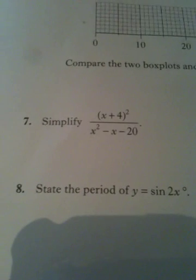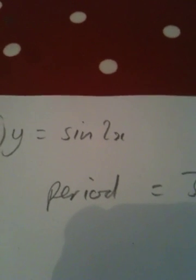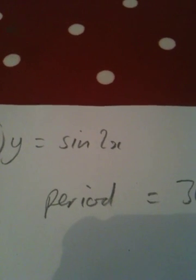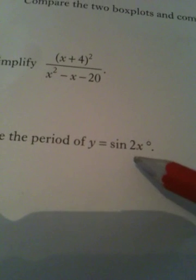Question number eight. State the period of Y equals sin 2X. The period is the length of a wave. And the 2 tells us that we will have two complete waves in 360. So if we do 360 divided by 2, that will tell us how long one wave is. And that is the period of the wave, 180 degrees.